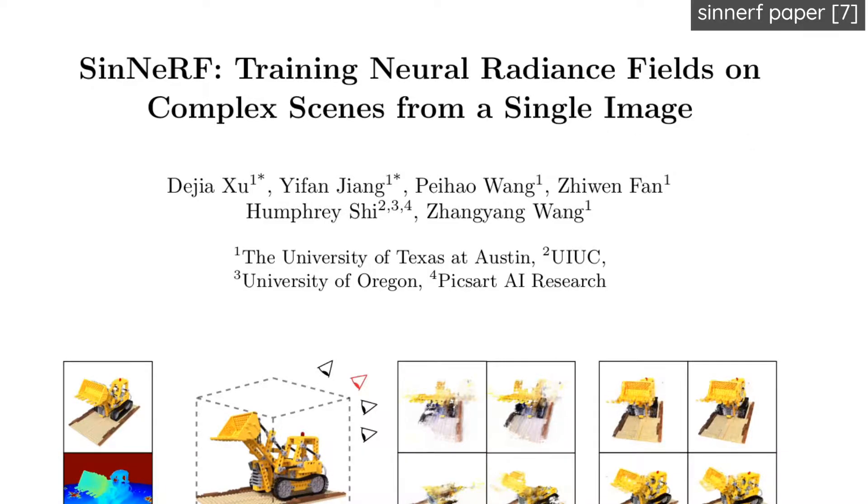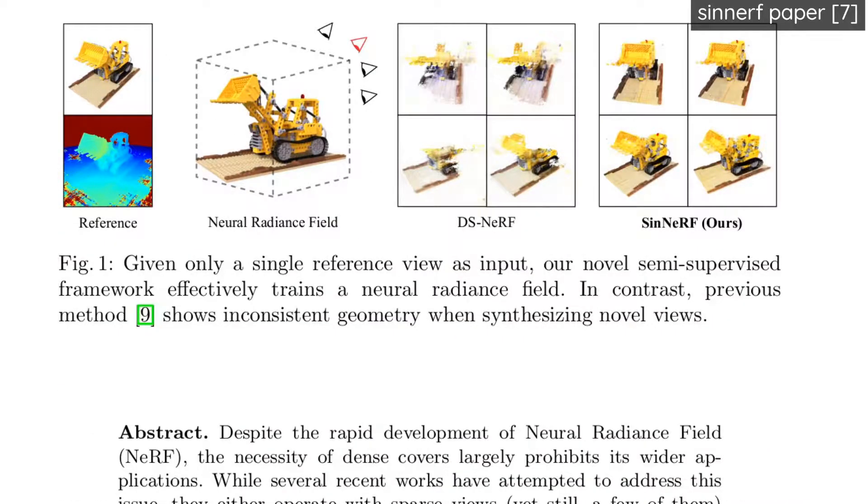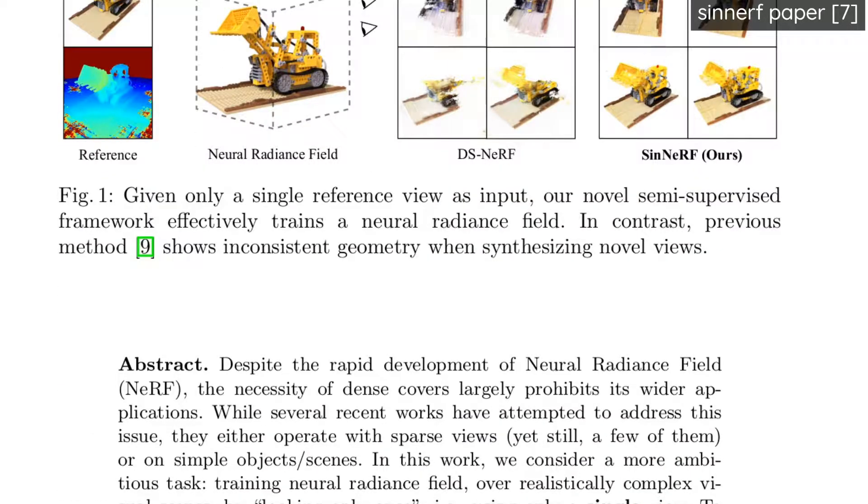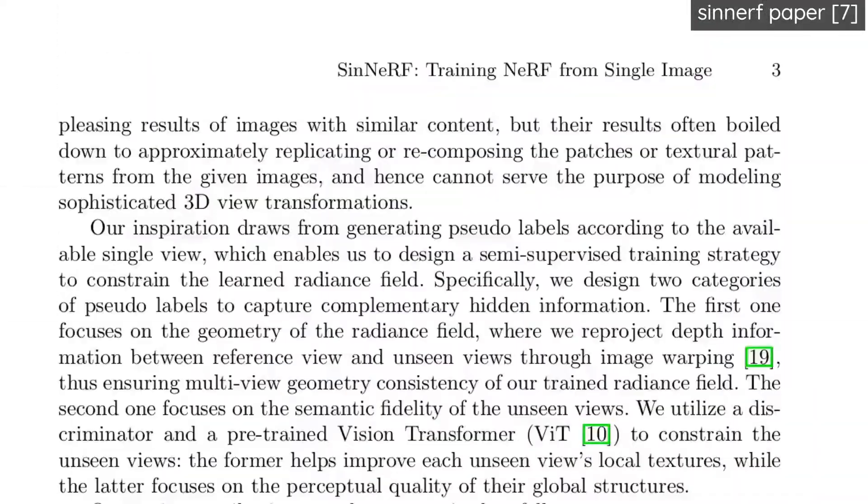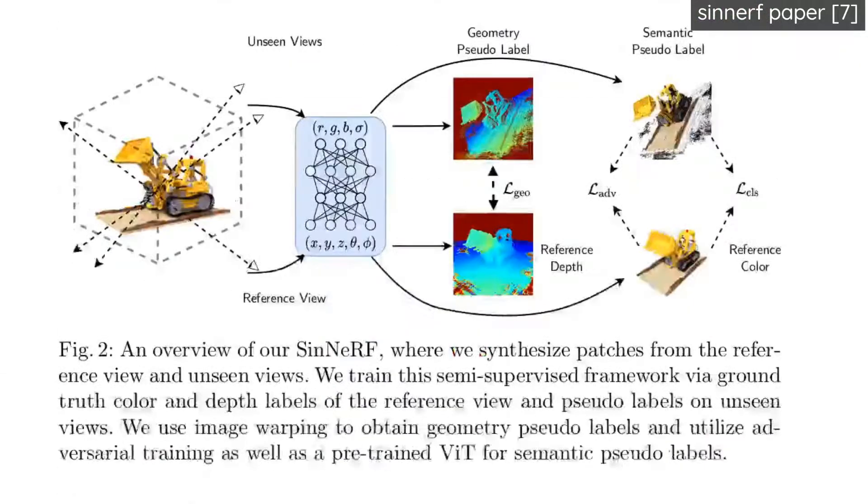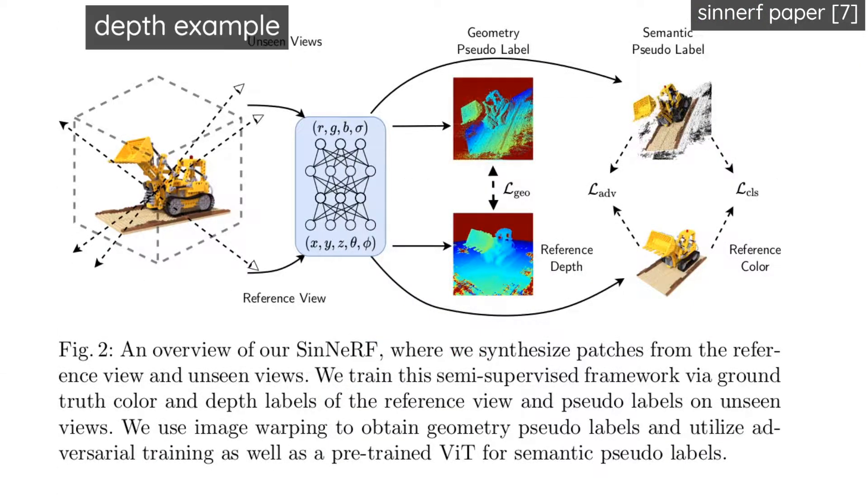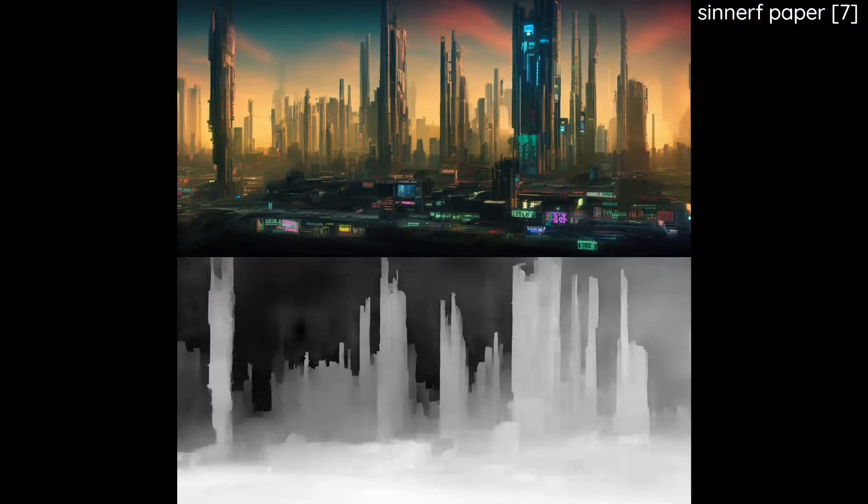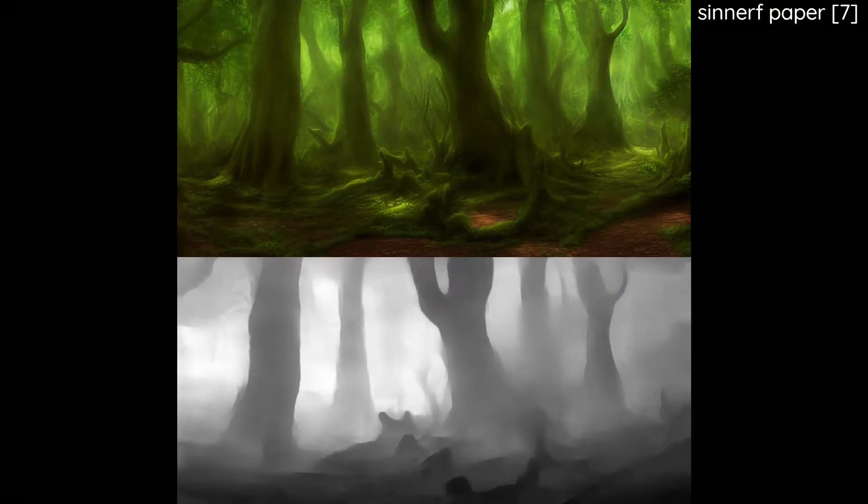One that I wanted to highlight is the SinNeRF, which stands for Single Image NeRF. They're using a depth map in conjunction with a NeRF to create a 3D object. I did attempt to use this because now we do have AI art and depth maps from those AI art pieces, so in principle you should be able to use this. But I was having some difficulty making it work. But in principle, you should be able to use that to get some 3D art.